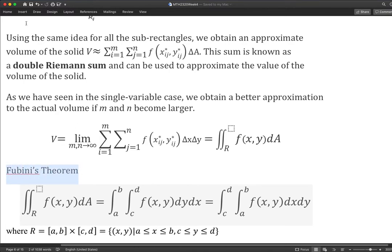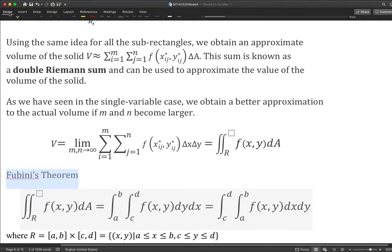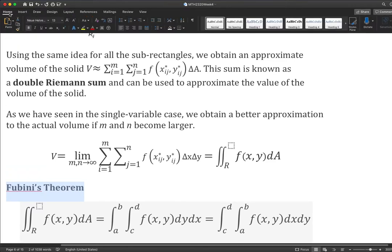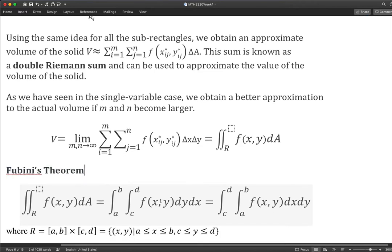Fubini's theorem says a double integral can be evaluated in two ways. Each is a double integral. We could evaluate the double integral first in terms of y first, y is matching the inner integral sign c to d, and then the outer integral is for x, x is matching a to b.